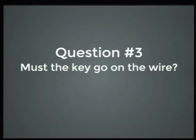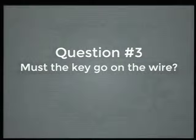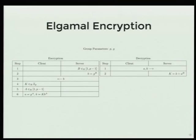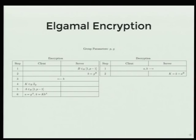Question number three: must the key go on the wire? My intention today is to kill someone with math — raise your hand if you're dead later. This is standard Elgamal encryption. The server generates a key pair and sends the public key to the client. The client generates its own key pair and encrypts some data. When performing decryption, the client returns an A value and a K value to the server. The K value is the encrypted value, and the server performs a mathematical operation returning uppercase K, which is the plain text data.